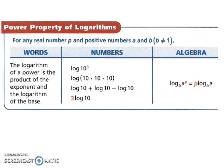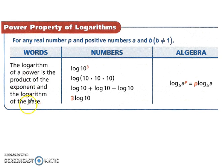Let's try the power property of logarithms. The logarithm of a power is the product of the exponent and the logarithm of the base. Think of it as taking the exponent and dropping it down in front. Algebraically, log base b of a to the p becomes p times log base b of a — your power comes down in front and you multiply log base b of a.